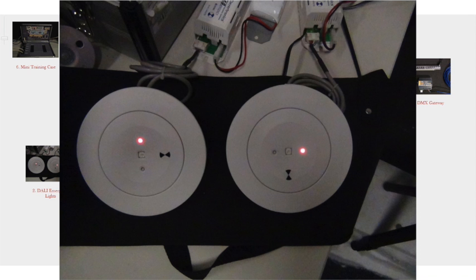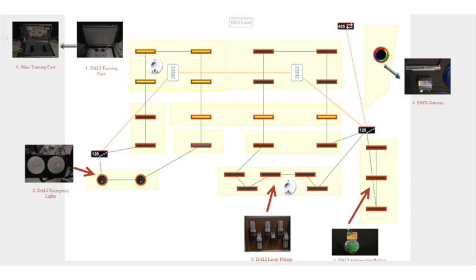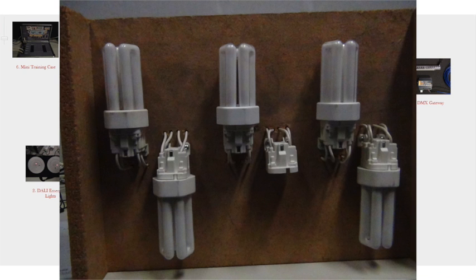There are four wiring terminals in the DALI training case. Wired to the first two are two DALI emergency light fittings. The next wiring terminal is connected to a board that contains five DALI light fittings. This will be used to demonstrate DALI lamp failure.